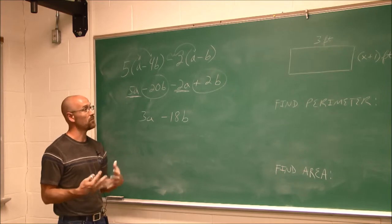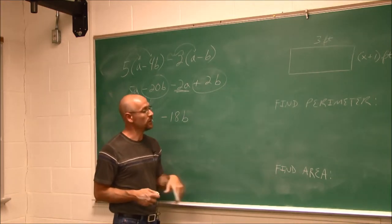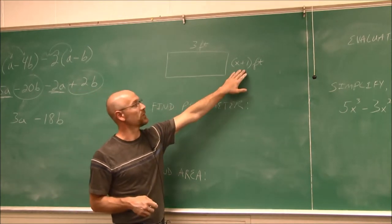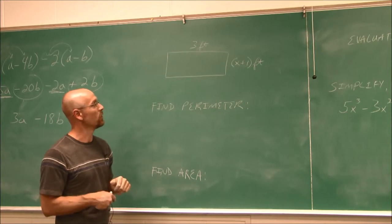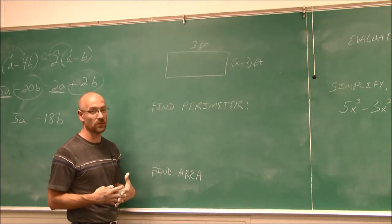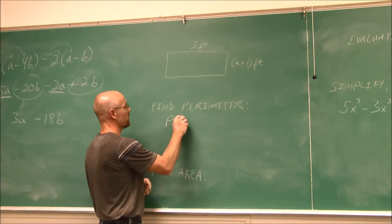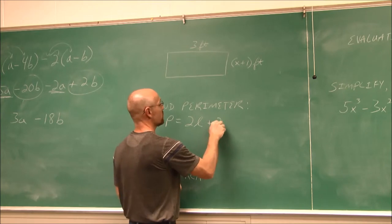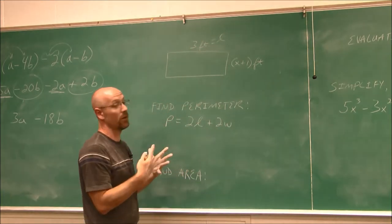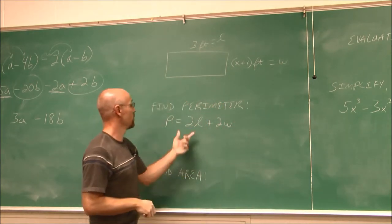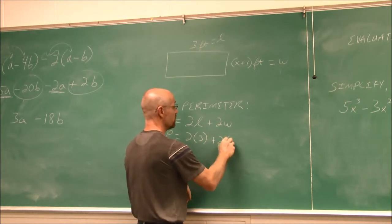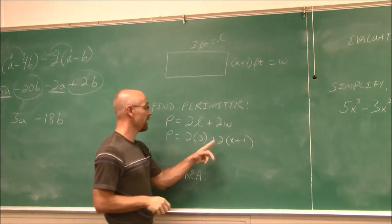We're going to look at an application. We have a rectangle where one side is 3 feet and the other side is x plus 1 feet — so whatever x is, this is one more foot than x. We're asked to find the perimeter. The formula is perimeter equals 2 times length plus 2 times width. I'll call the longer side my length. So the perimeter is 2 times 3 plus 2 times the quantity x plus 1, and now I have to use the distributive property.